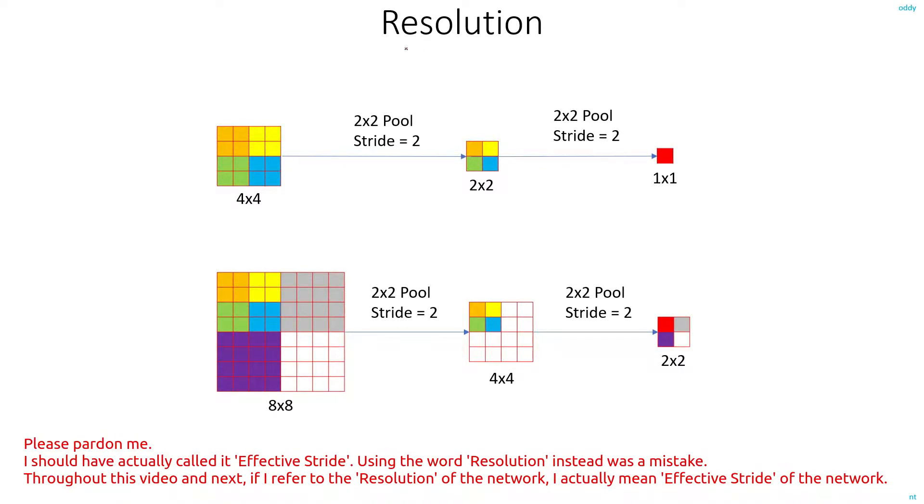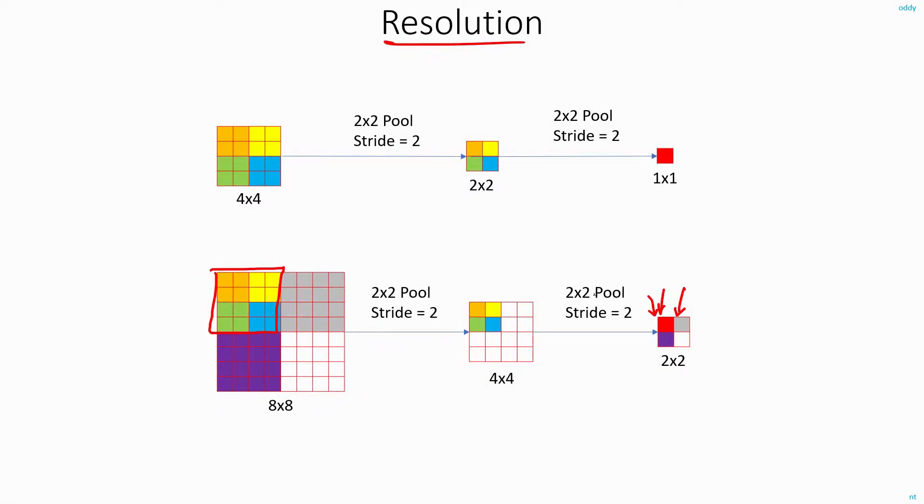Another concept you should know is that of resolution. In this example, if I shift my focus from this red box to the gray box, how much am I shifting in the input side? If I'm looking at this red box, I'm basically looking at this 4 by 4 patch of the image. If I shift my focus to this gray box, I'm looking at this 4 by 4 patch of the image. So when I move 1 pixel to the right in the output, at the input side I'm moving by 4 pixels. So the resolution of this network is 4.